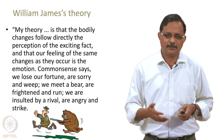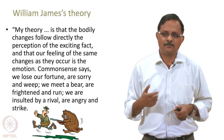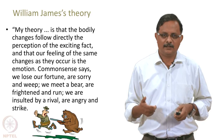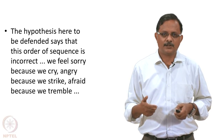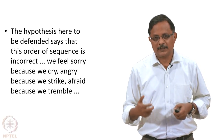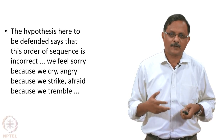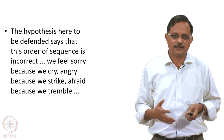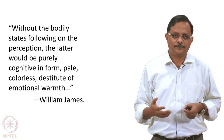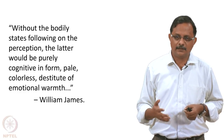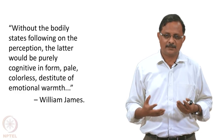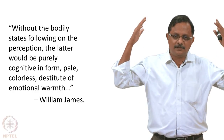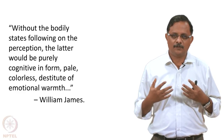James is saying emotion is somatic — felt all over the body, not just in the head. In his words: common sense says we lose our fortune, are sorry, and weep; we meet a bear, are frightened, and run; we are insulted and are angry and strike. But his hypothesis reverses this: we feel sorry because we cry; we feel angry because we strike; we are afraid because we tremble. Without the bodily states, the perception would be purely cognitive — pale, colorless, destitute of emotional warmth.